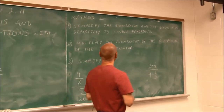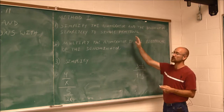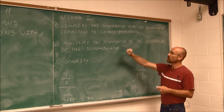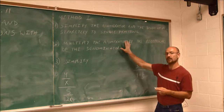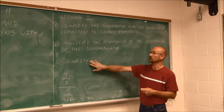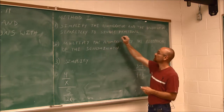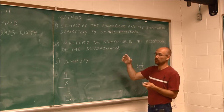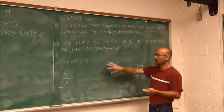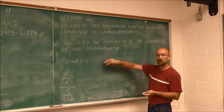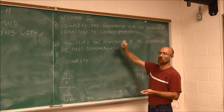The first one is Method 1. Step 1 says: simplify the numerator and the denominator separately to single fractions. So if we have a complex fraction that has addition or subtraction in the numerator and addition or subtraction in the denominator, we want to do that addition or subtraction and simplify it to a single fraction — combine it. That's what step 1 is telling us to do.